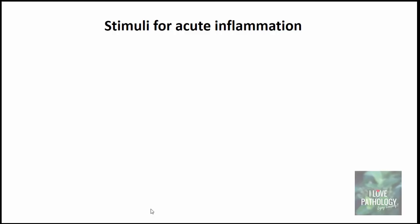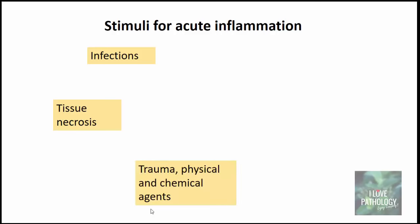The most important stimulus or trigger for inflammation is infection, which can be bacterial, viral, fungal, or parasitic. The second important stimulus is tissue necrosis, which elicits inflammation regardless of the cause — the molecules released from necrotic cells are the ones that actually trigger the inflammatory response.